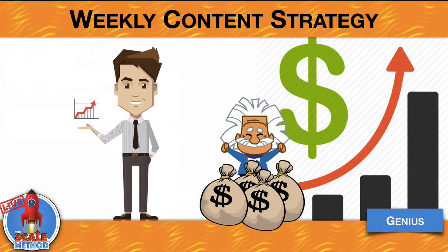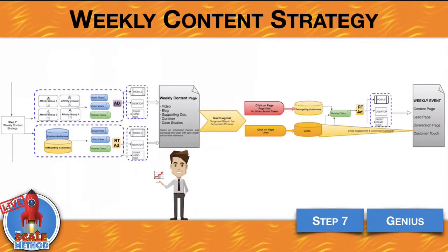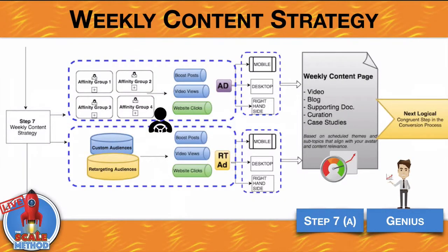Now a weekly content strategy — this is really where things start to take off. It's a genius strategy. The genius level adds steps seven through 12: weekly content, weekly events, and a weekly call to action. Step seven helps to recover some cost. You're going to start targeting your affinity groups that are giving you the best quality cost per likes and cost per clicks. Run boost posts, video views, and website clicks — a content ad on mobile, desktop, and right-hand side — to a new weekly video, weekly blog post, supporting documentation, or case studies. Sending them to additional content that aligns the belief system as they're in the buying process.